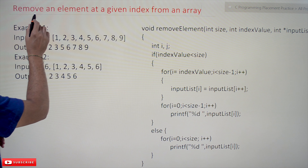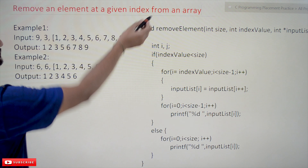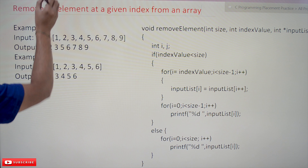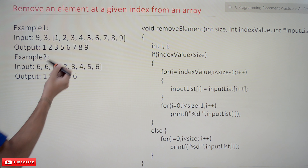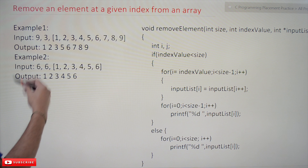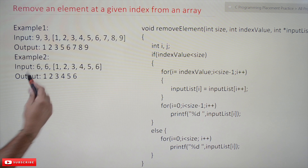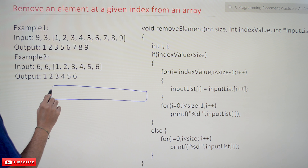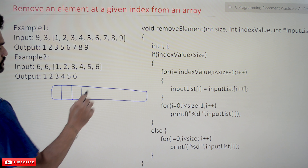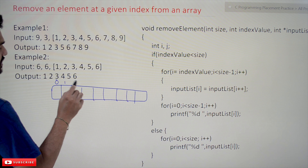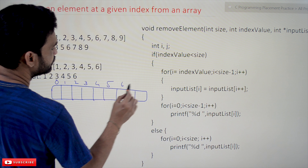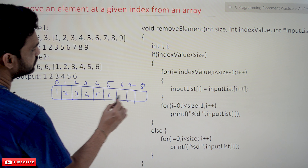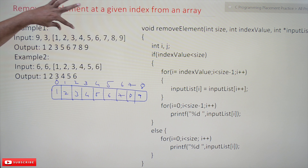The problem states we have to remove an element at a given index from an array. These are the test cases provided — test case 1 and test case 2. Based on these we'll understand how inputs are provided and what output we need. In the array we have nine elements.